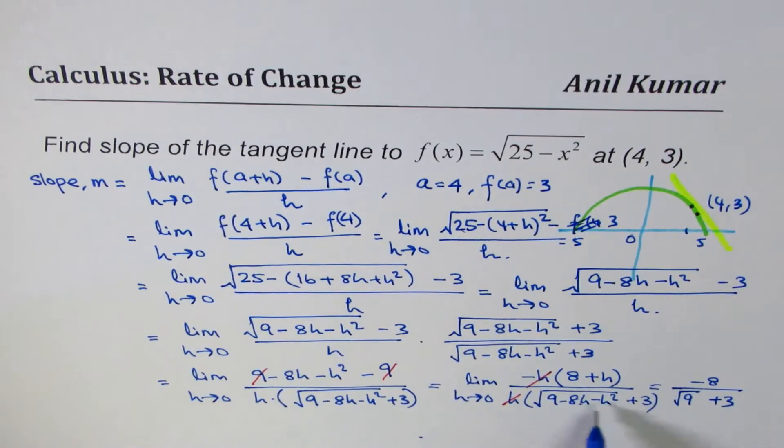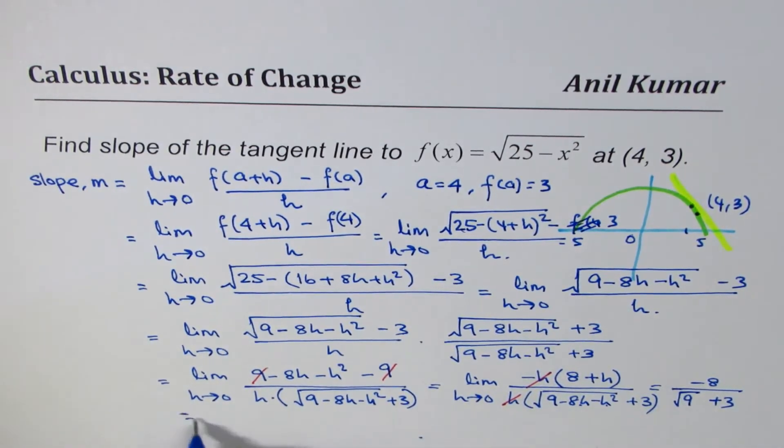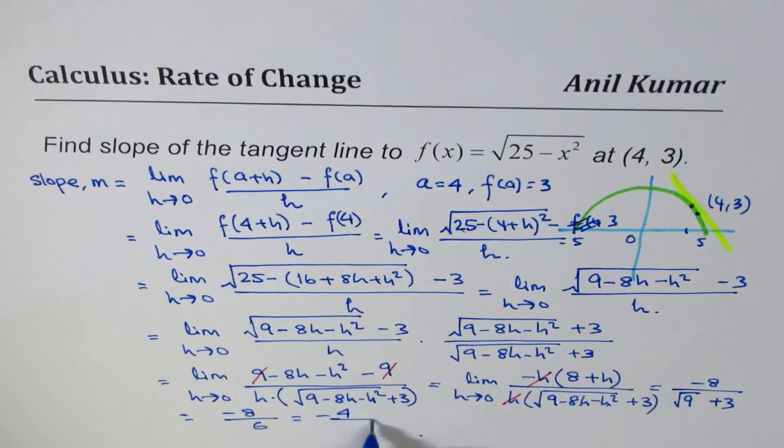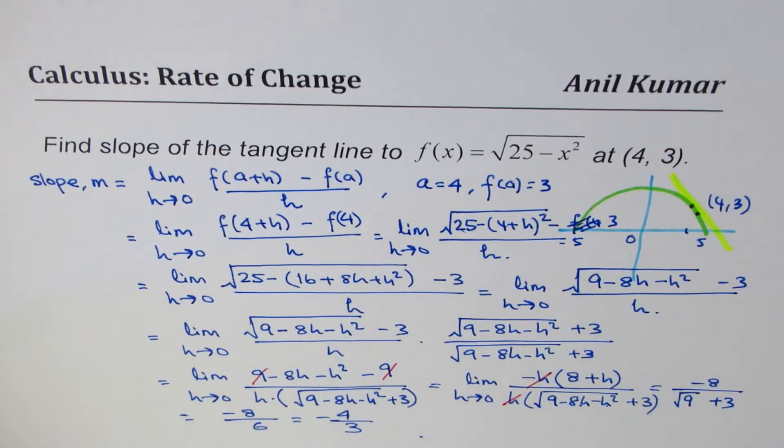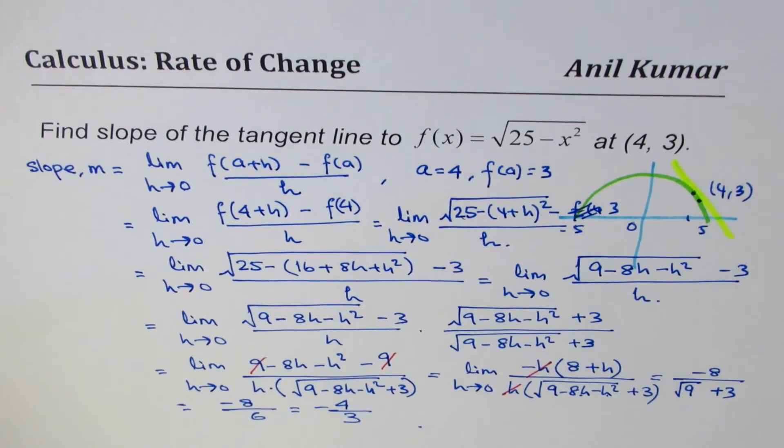When h approaches 0, these two terms are 0. So we get minus 8, divided by square root of 9 is 3. 3 plus 3 is 6. So that gives us, minus 8 over 6. Or, simplify this as, minus 4 over 3. So the slope of the tangent line at (4, 3) will be minus 4 over 3.